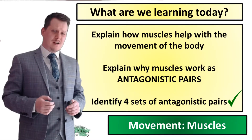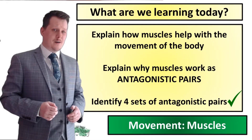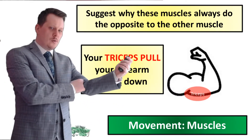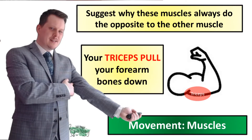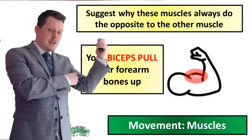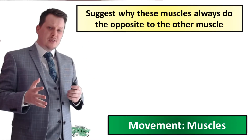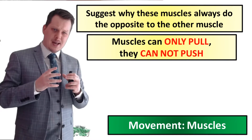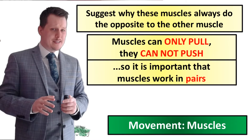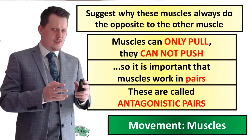Now that we've identified one set of antagonistic pairs, we need to define what antagonistic pairs really are and why they work this way. When you straighten your arm the tricep muscles pull the bones of the forearm downwards — that's why it contracts. When you bend your arm upwards it is the biceps that pull the bones of the forearm upwards. This is because muscles can only pull the skeleton; they cannot push it. So muscles must work in pairs — these are the antagonistic pairs — where when one muscle contracts the other relaxes.